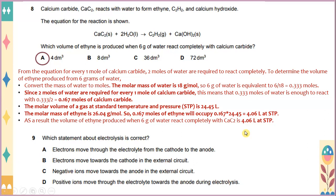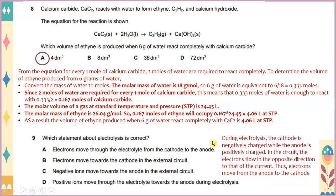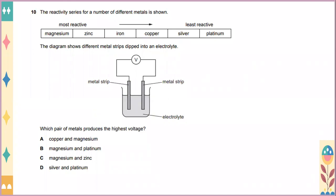Which statement about electrolysis is correct? During electrolysis, the cathode is negatively charged while the anode is positively charged. In the circuit, the electrons flow in the opposite direction to that of the current. Thus, electrons move from the anode to the electrode. Electrons move towards the cathode in the external circuit. The reactivity series used for a number of different metals is shown from most reactive to least reactive, which is from magnesium to platinum.